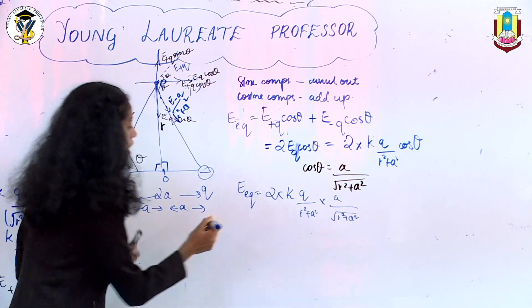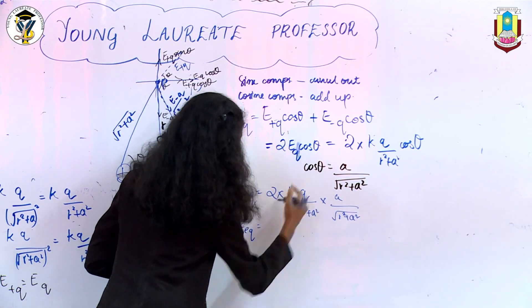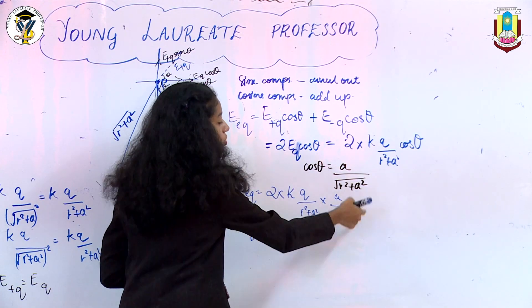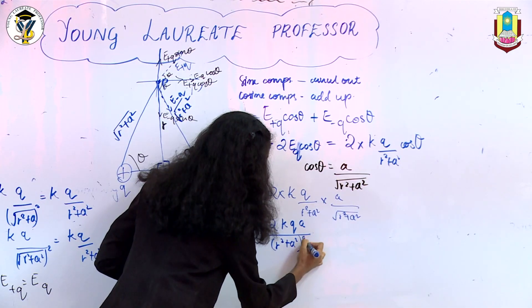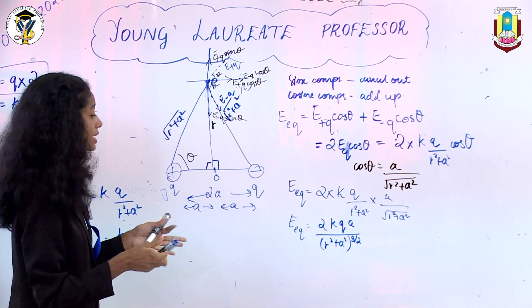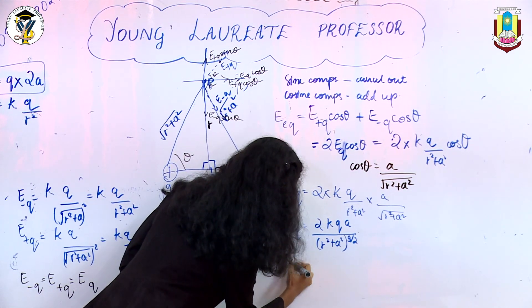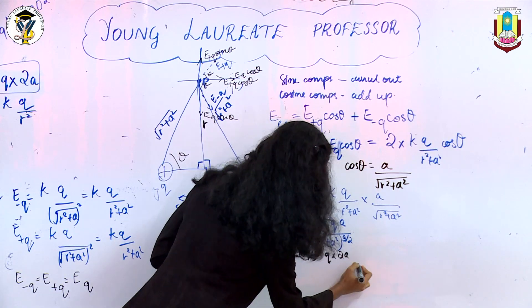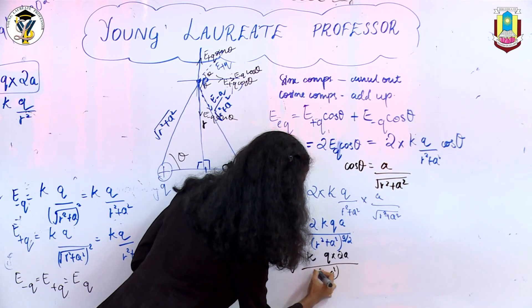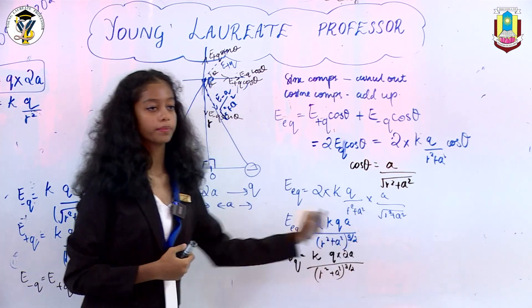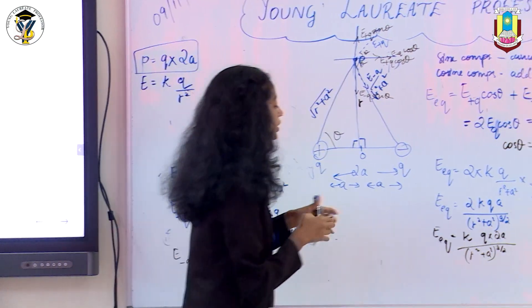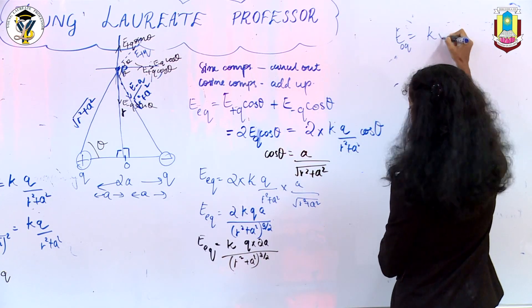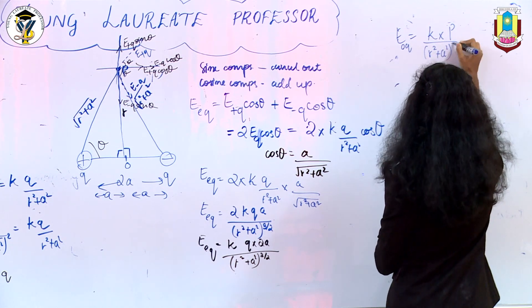We can rewrite the numerator: E_equatorial = k × (Q × 2a) / (r² + a²)^(3/2). Since Q × 2a equals P (the electric dipole moment), we substitute to get E_equatorial = kP / (r² + a²)^(3/2). This is the general formula for a normal dipole.